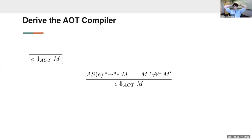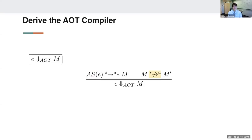We can derive the ahead-of-time compiler from this by picking a subset of reductions. To compile a source expression e to target m: first inject e with a multi-language boundary (source needs to behave like target), then run all cross-language reductions to completion. The result is a fully normalized target term with no more boundaries — this defines compilation.